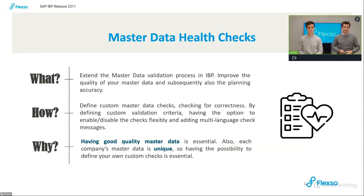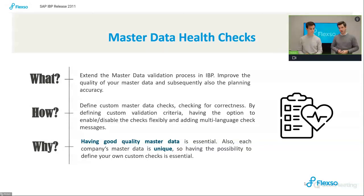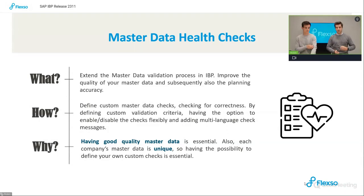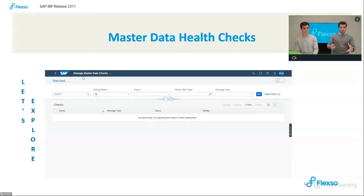You can also add multi-language check messages, so whenever any master data-related action happens in the system, a multi-language message can pop up on your screen indicating that something might be wrong or needs to be changed. IBP and SAP are highly focused on master data quality because good quality data is essential for more accurate planning. Since each company's master data is unique, it's essential that each customer can have its own custom criteria and checks.